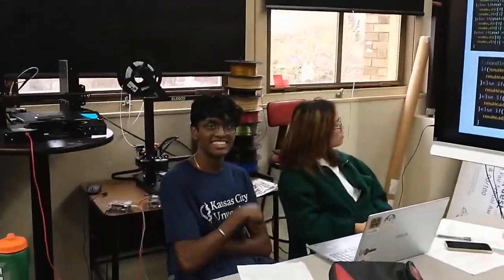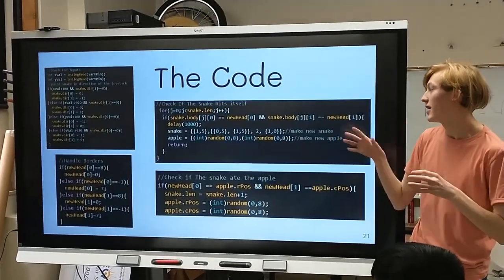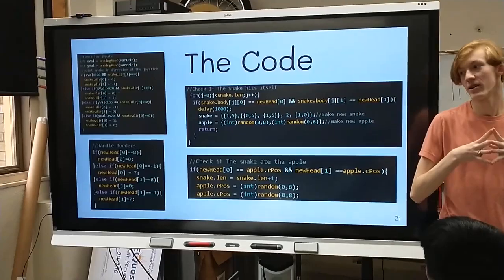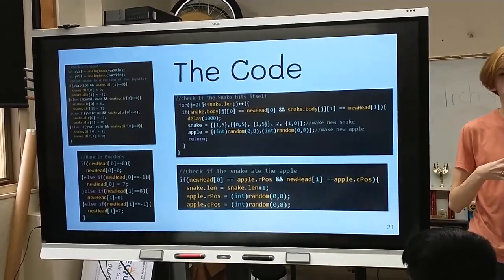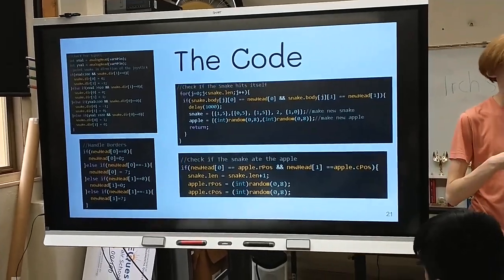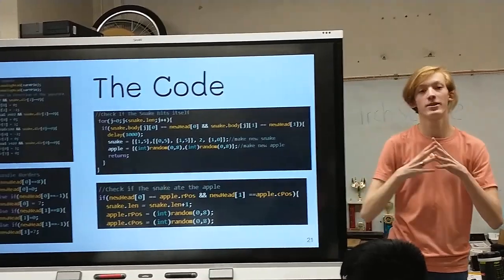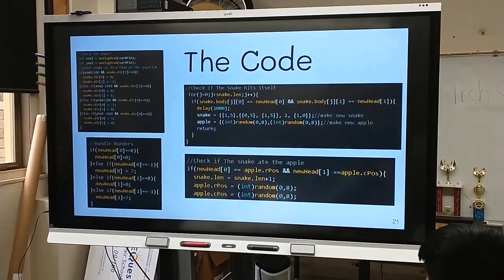If the snake hits its body, not necessarily its tail but the rest of its body, then it will kill itself because like all snakes do they hate themselves. And if the head overlaps with the apple then it will eat the apple and extend the length of the snake. Very intricate code, I'm sorry if you guys can't understand it.